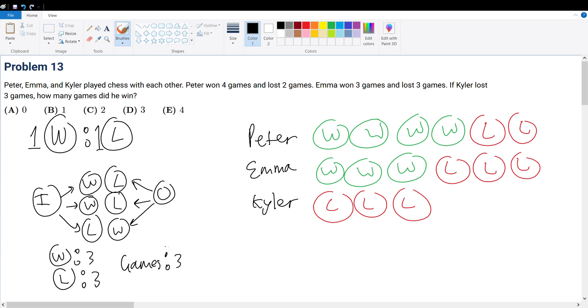So what do you notice about this simpler example? You notice that there's not only a 1-to-1 correspondence between the number of wins and the number of losses. There's also a 1-to-1 correspondence between the wins, losses, and the number of games played.